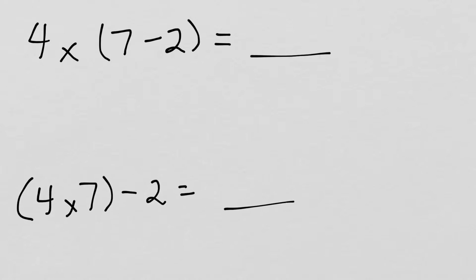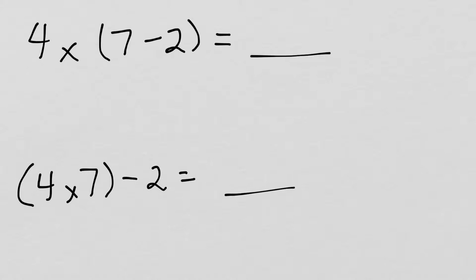We're going to look at how those are different. If we take a look at this first problem and do 7 minus 2 first, that's easy. 7 minus 2 is 5. Then I still have to multiply by 4. This becomes 4 times 5. If I count by 5s, 10, 15, 20, I see that's 20.